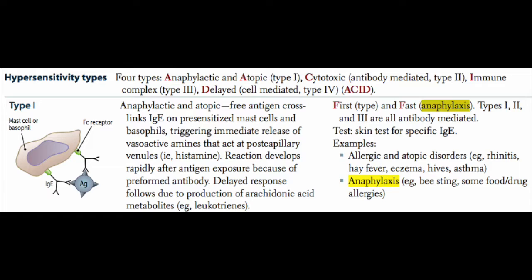Because the IgE is already bound to these mast cells and basophils, once it's activated by binding its antigen, the mast cells and the basophils are actually going to release large amounts of histamine.